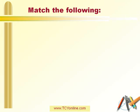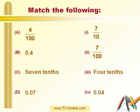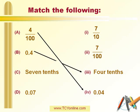Similarly, let's see how to match the following. We have to match the numbers on the left with the numbers on the right. First is 4 over 100, which means 4 out of 100. We can write this in decimal form as 0.04, so A matches with 4. Next is 0.4. We can write this decimal in fractional form as 4 over 10 — that is, 4 out of 10 — which can be written as 4 tenths. So B matches with 3.